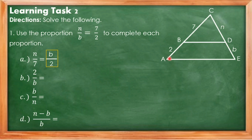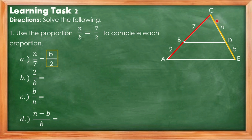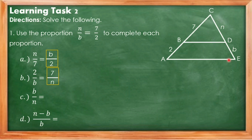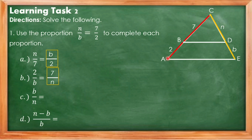Letter B: 2 over B. Here 2 and B are the shorter lengths from each side of the triangle. To complete the proportion, we take the longer lengths: 7 over N. So the answer is 7 over N. Letter C: B is to N, meaning shorter length over longer length from one side. The proportion from the other side is also shorter over longer, giving us 2 is to 7.